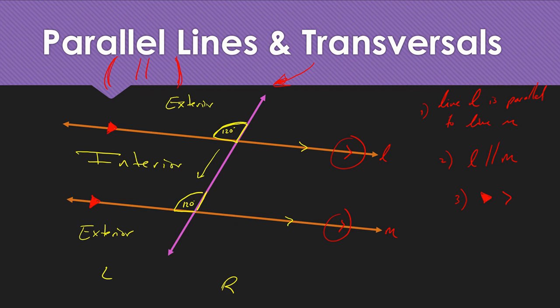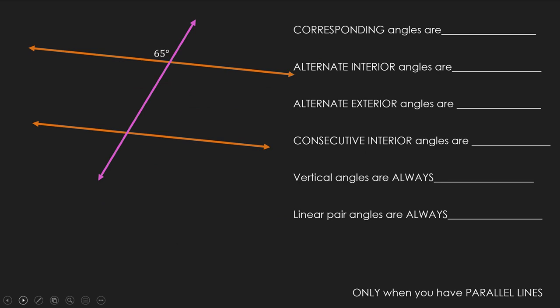So we have new properties — not new angle pairs, but new properties to the angle pairs. Once you know you have parallel lines and you know that corresponding angles are congruent, you can pretty much find all the other angles. Two things to know: vertical angles are always congruent — no matter what, always — and linear pair angles are supplementary, meaning they add up to 180 degrees.